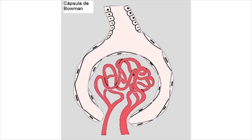The kidney is one of the most important organs in the human body and mainly involved in the excretion of metabolic waste products. The main excretory products include water, urea, uric acid, creatinine, and salts of sodium, calcium, magnesium, and potassium.